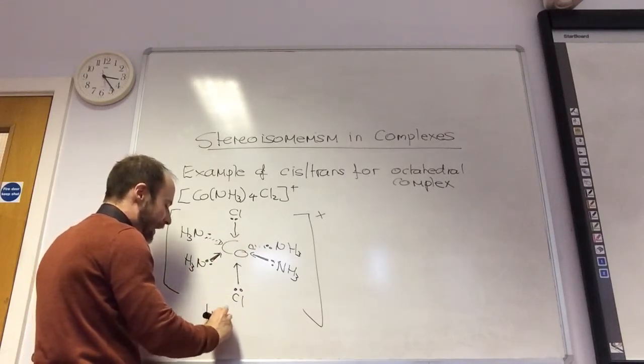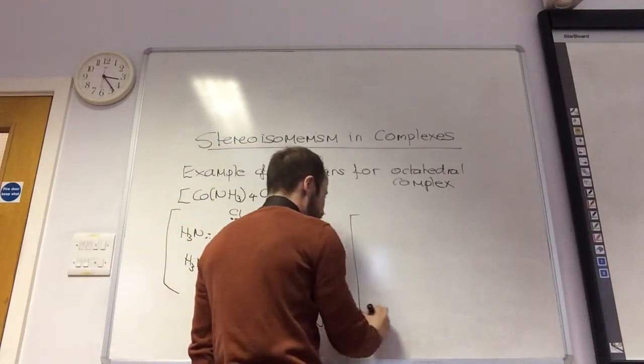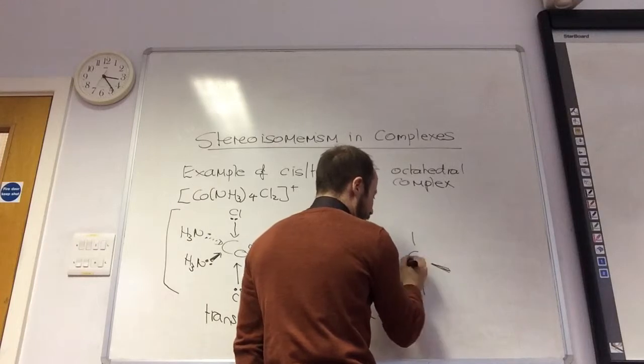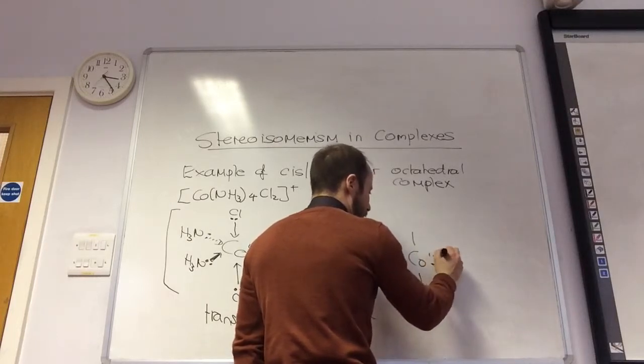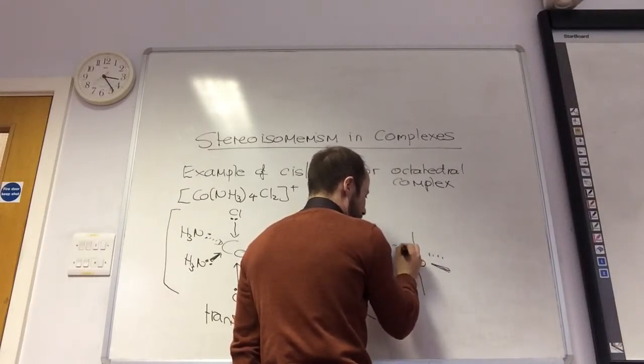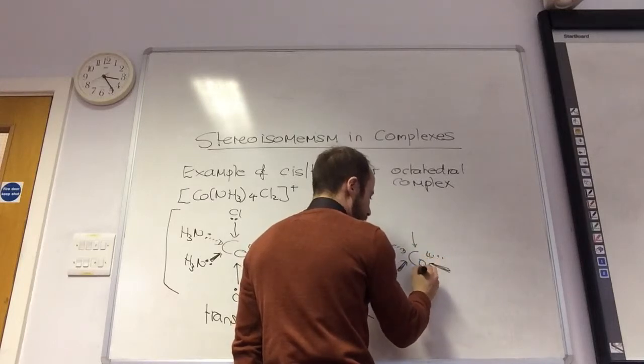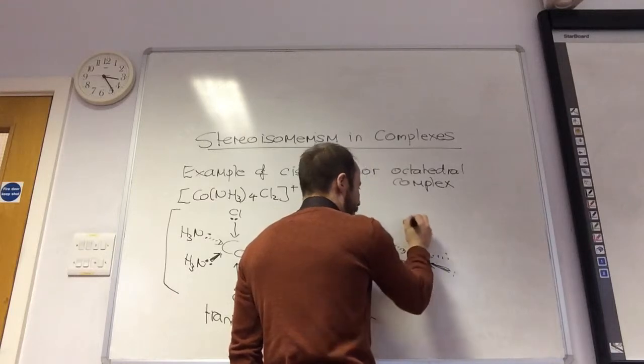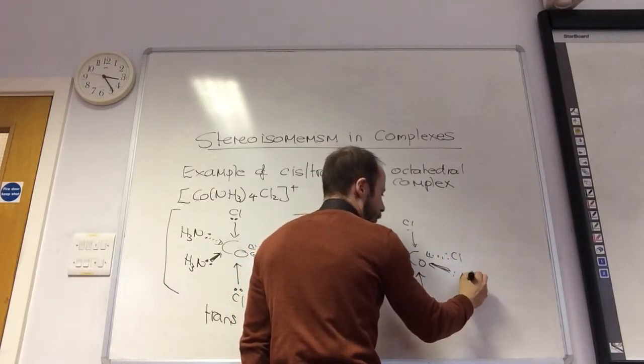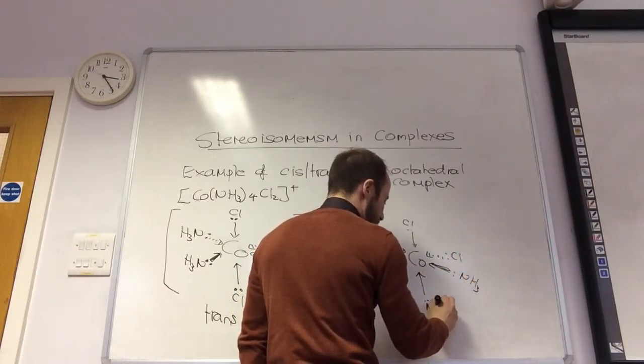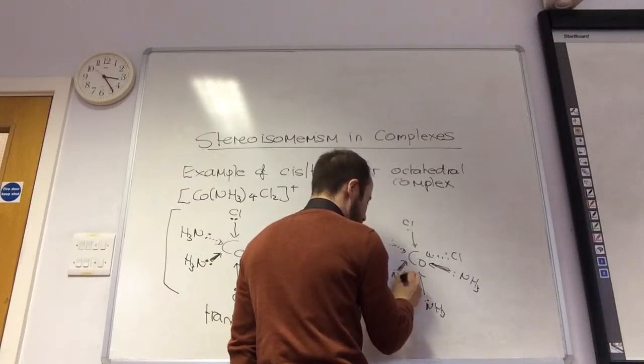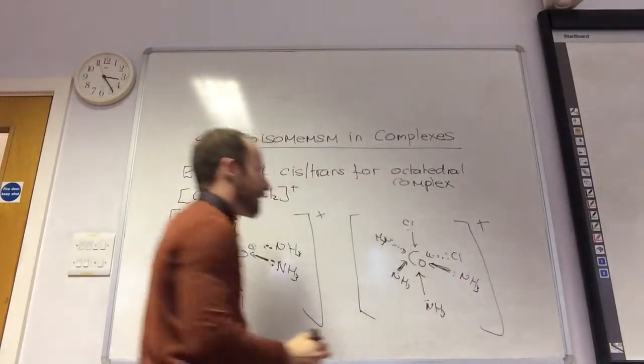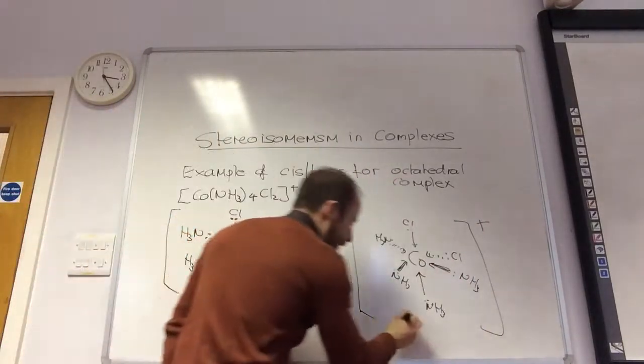So let's do cis, again, bonds like so. Arrows on the end. Lone pairs. And now I'm just going to put the chlorides next to each other like so. And then do we put a plus on the outside of the bracket? Yeah, and brackets, plus, like so. And this one is cis.